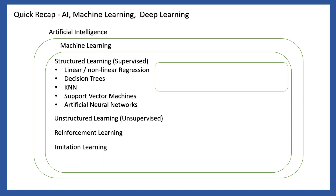Imitation learning is a learning method used, for example, in self-driving cars. Deep Neural Networks are also called Deep Neural Networks and are a key topic we will discuss.